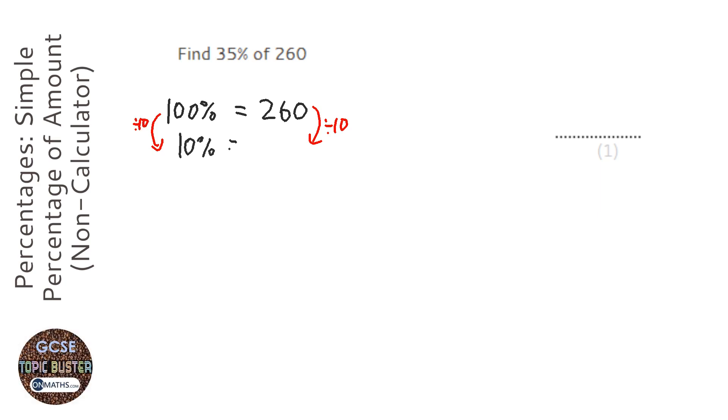So 10% would be 260 divided by 10, which is 26. Then I'm going to work out 5% because I'll need 35, so I need to find that 5. All I'm going to do is half the 10% to get 5%, so half of 26 is 13. Now for 30%, I'm going to get that 10% and times it by 3.